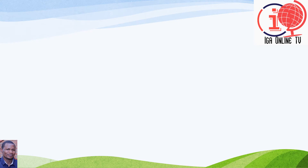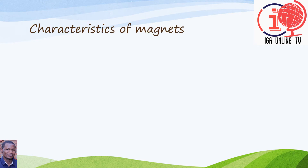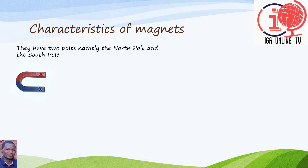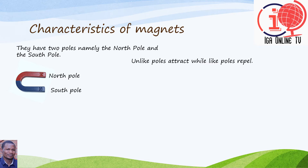Let's think of the characteristics of magnets. They have two poles, namely the north pole and the south pole. As you see, here you have a magnet with a north pole and a south pole. Unlike poles of a magnet attract, while like poles repel.